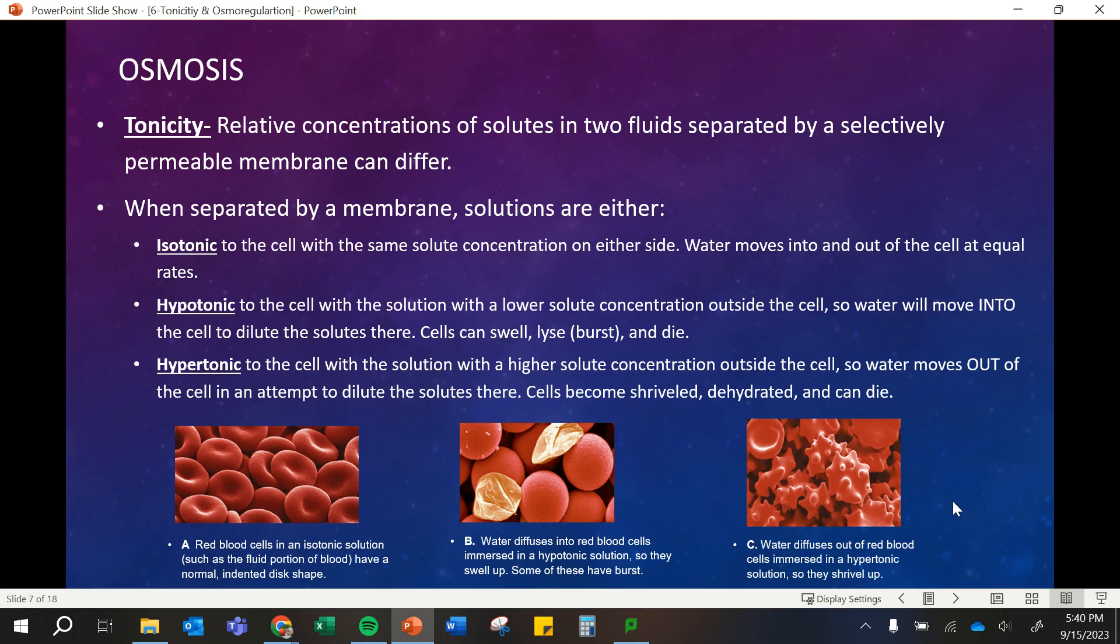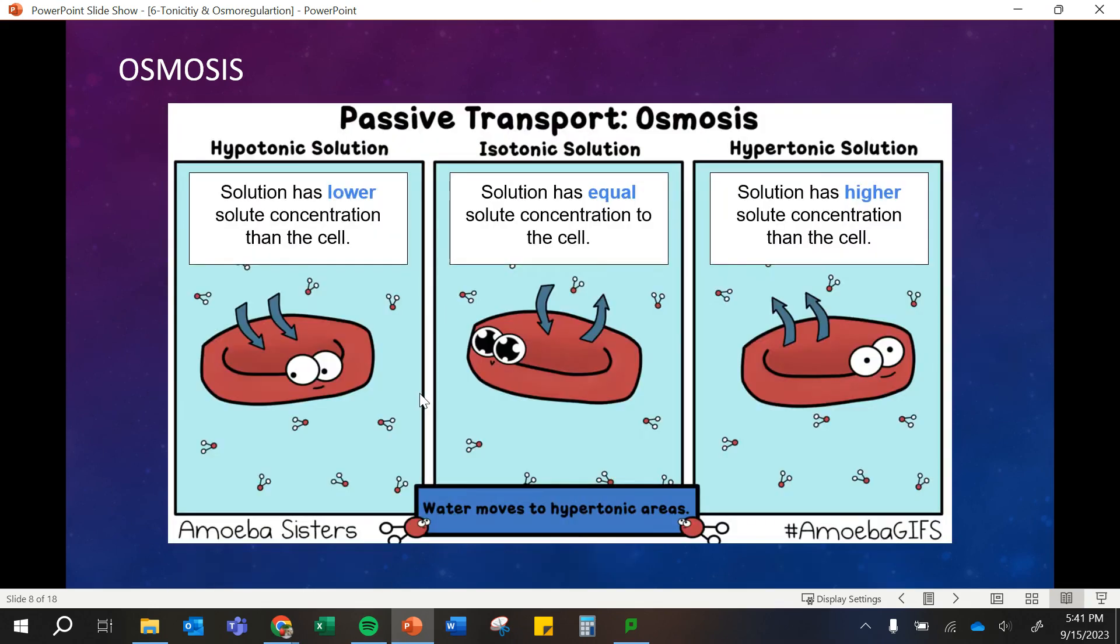And then hypertonic solutions, where there's more dissolved inside the solution than inside the cell, and that causes the water to move out of the cell. And it can cause the cell to shrivel and become dehydrated and die. So for animal cells, we want an isotonic solution.